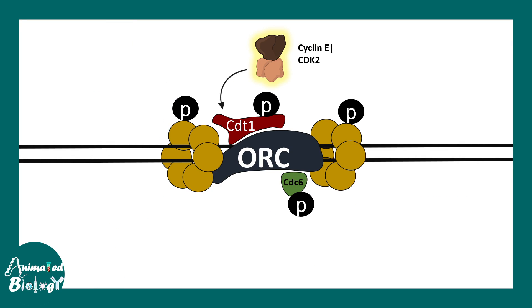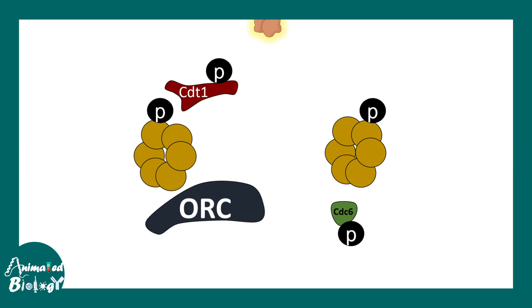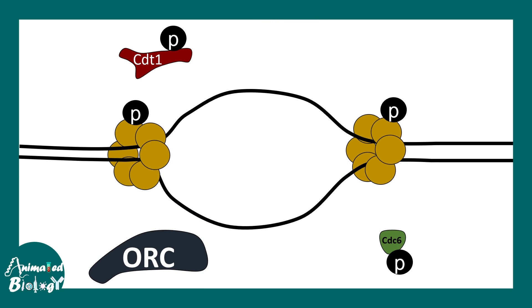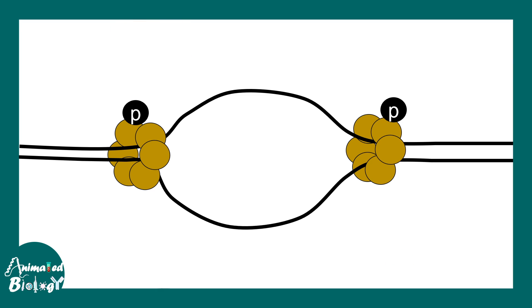Now let's move on. So right now we are at the initiation step. Due to the phosphorylation, the ORC complex fall off, the CDT1, CDC6, all of them disassemble. The helicase start its job of unwinding the DNA strands. Now two strands get separated. The hydrogen bonds between them is broken. And this is really important because the replication bubble starts to form.